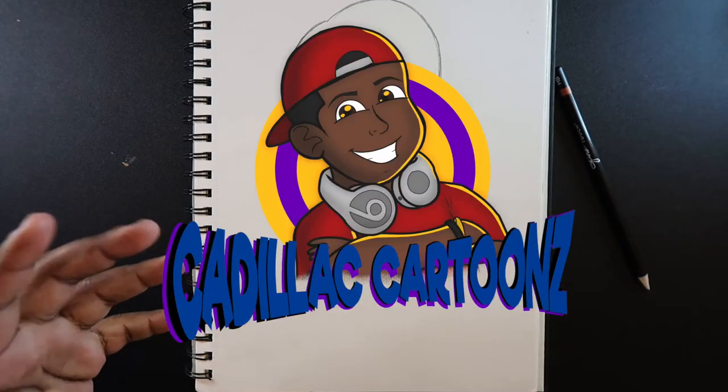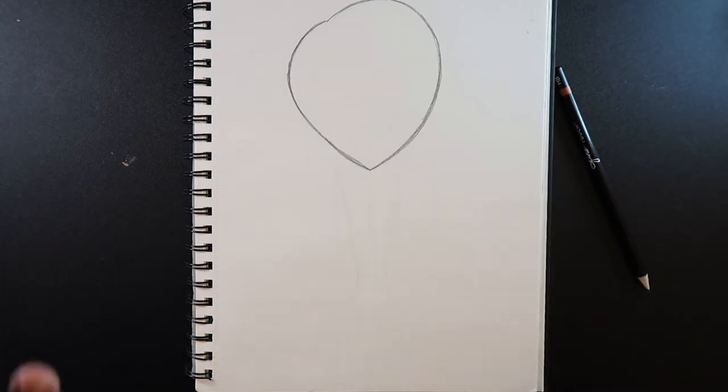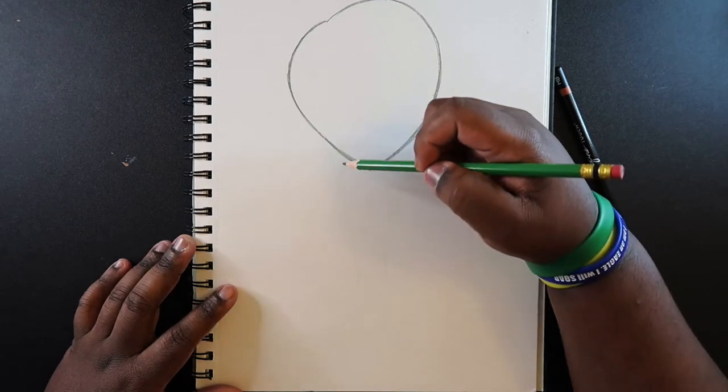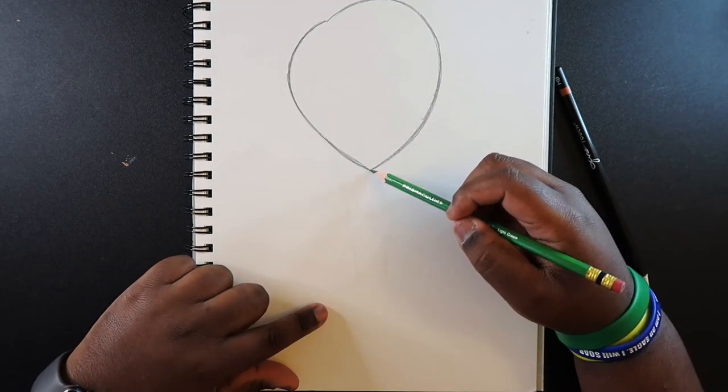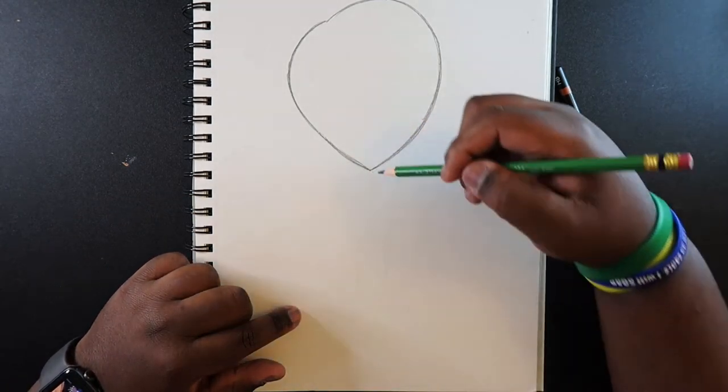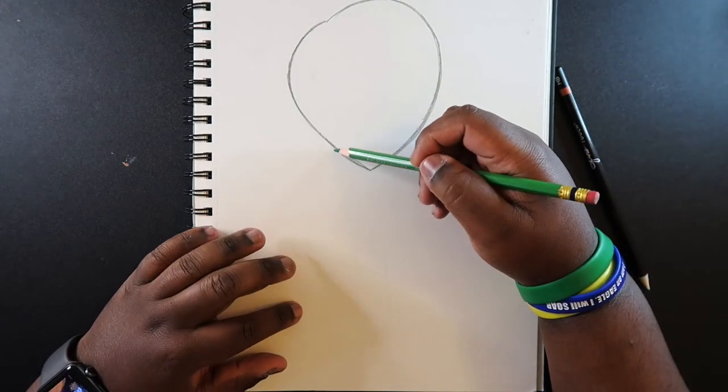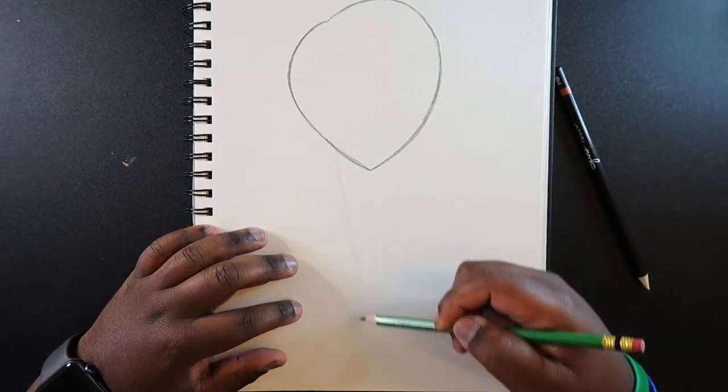What's good everybody, welcome back to Cadillac Cartoons. Today I'm gonna show you how to draw braids. Like usual with braids, you start off with the hair and it kind of comes into the middle and tapers a little bit right here. So we're gonna start off with drawing a line that kind of goes down.